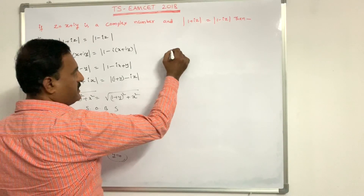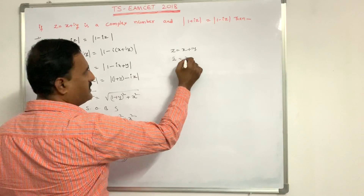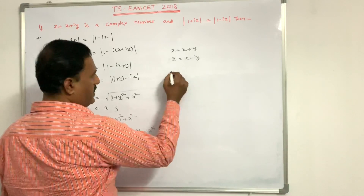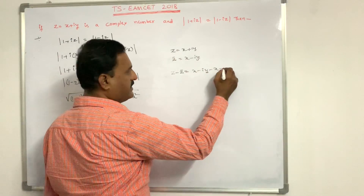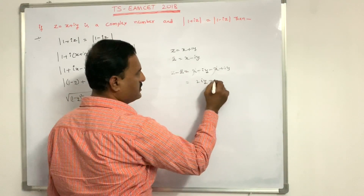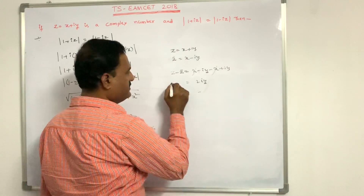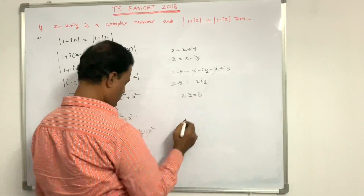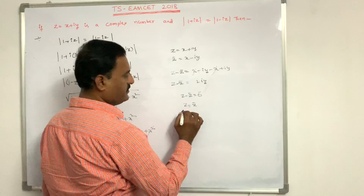Since y = 0, we note that z = x + iy and z̄ = x - iy. So z - z̄ = (x + iy) - (x - iy) = 2iy. With y = 0, z - z̄ = 0, therefore z = z̄. This is the answer.